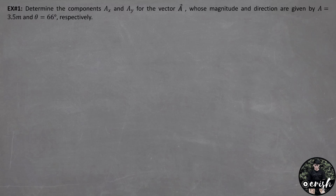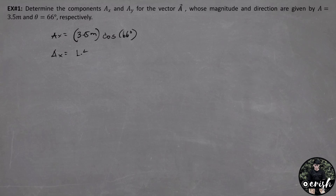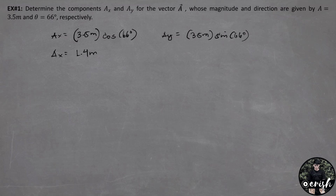Example number 1: Determine the components Ax and Ay for the vector A whose magnitude and direction are given by A equals 3.5 meters and angle theta equals 66 degrees respectively. Solving first for Ax, the horizontal component: Ax equals 3.5 meters times cosine 66 degrees, which gives Ax equal to 1.4 meters. For Ay, the vertical component: 3.5 meters times sine 66 degrees, giving Ay equal to 3.2 meters.